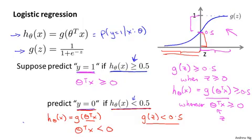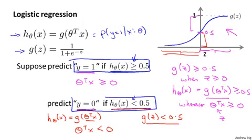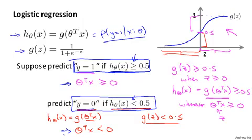To summarize what we just worked out: if we decide to predict y equals 1 or y equals 0 depending on whether the estimated probability is greater than or equal to 0.5 or less than 0.5, that's the same as saying we'll predict y equals 1 whenever theta transpose x is greater than or equal to 0, and we'll predict y equals 0 whenever theta transpose x is less than 0. Let's use this to better understand how the hypothesis of logistic regression makes its predictions.